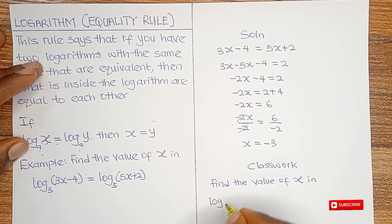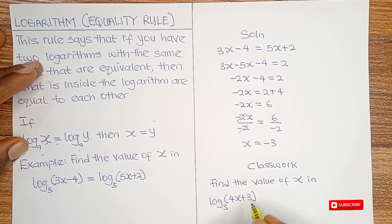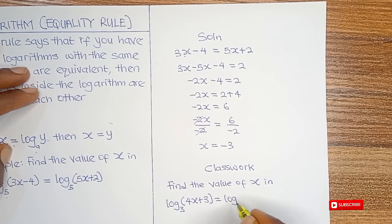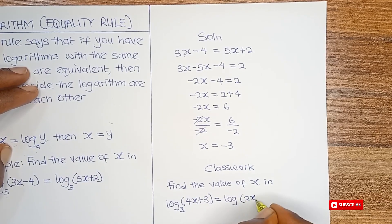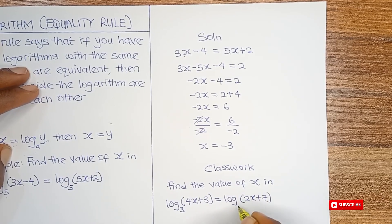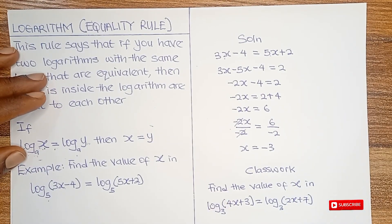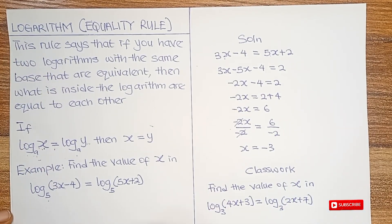log (4x plus 3) base 3 is equal to log (2x plus 7) base 3. So I'd like to see your answer to this question in the comment section.